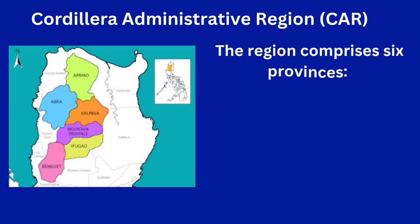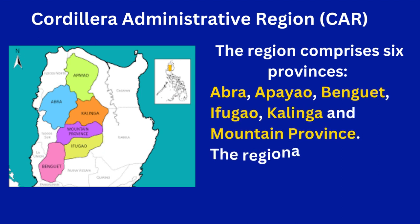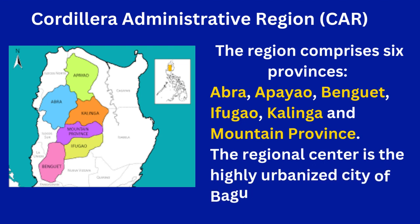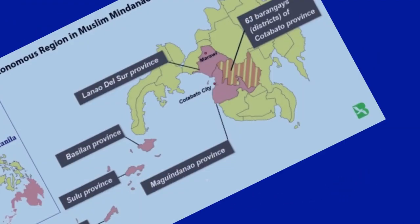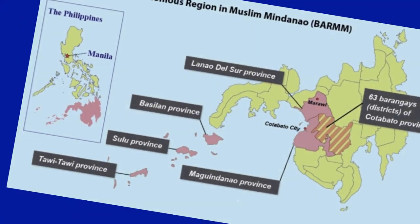Now let's move to the Cordillera Administrative Region, or CAR. The region comprises six provinces: Abra, Apayaw, Binguet, Ifugao, Kalinga, and Mountain Province. The regional center is the highly urbanized city, which is Baguio City — the summer capital of the Philippines. We also have the Bangsamoro Autonomous Region in Muslim Mindanao, or BARMM, composed of Lanao del Sur, Basilan, Sulu, Tawi-Tawi, Maguindanao provinces, and the 63 barangays of Cotabato province.